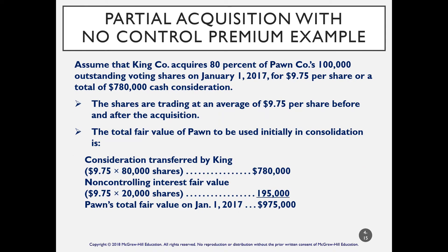Let's take a look at an example. King Company acquires 80% of Pond Company — 100,000 shares on January 1st, 2017 — for $9.75 per share, for a total of $780,000 cash. They're not paying a premium; the price is $9.75 per share, so the same price applies to the non-controlling interest as well. We have the controlling interest fair market value and the fair value of the non-controlling interest, for a total fair value for this subsidiary of $975,000.